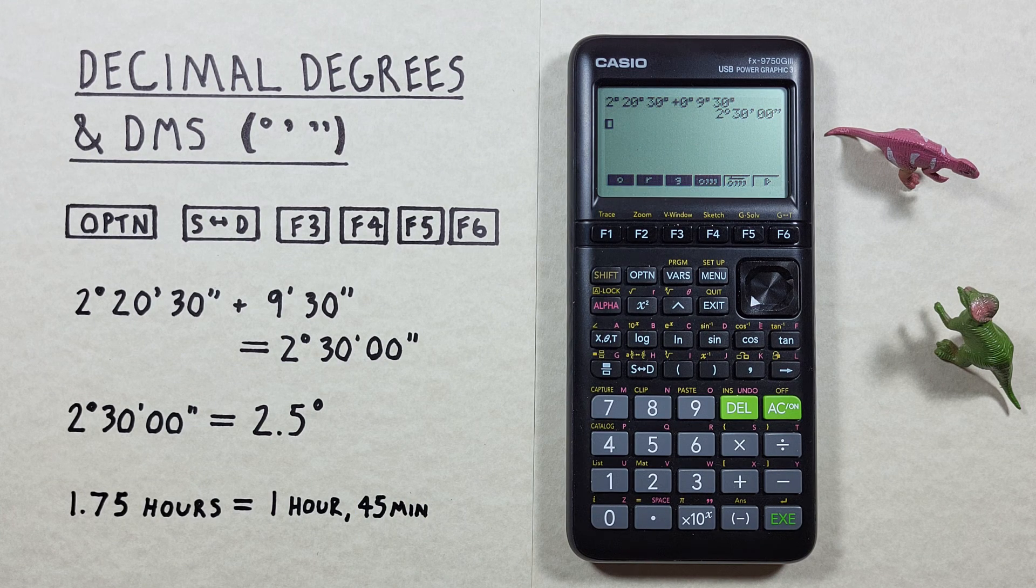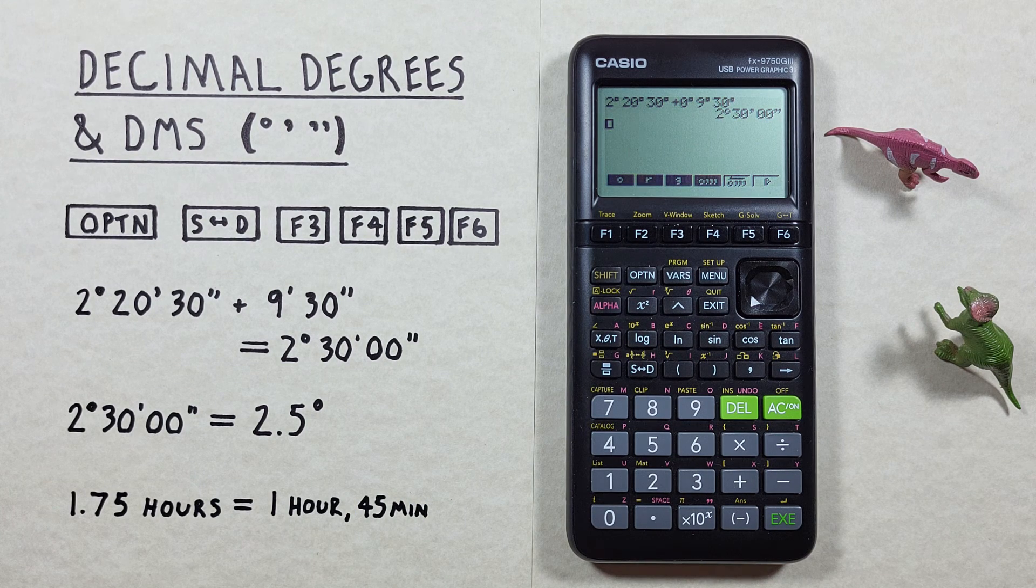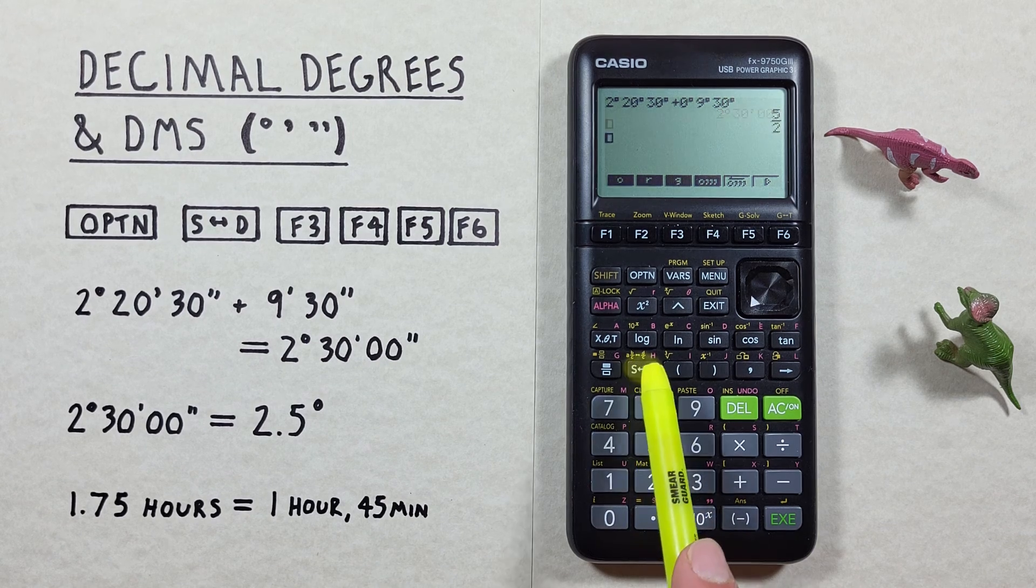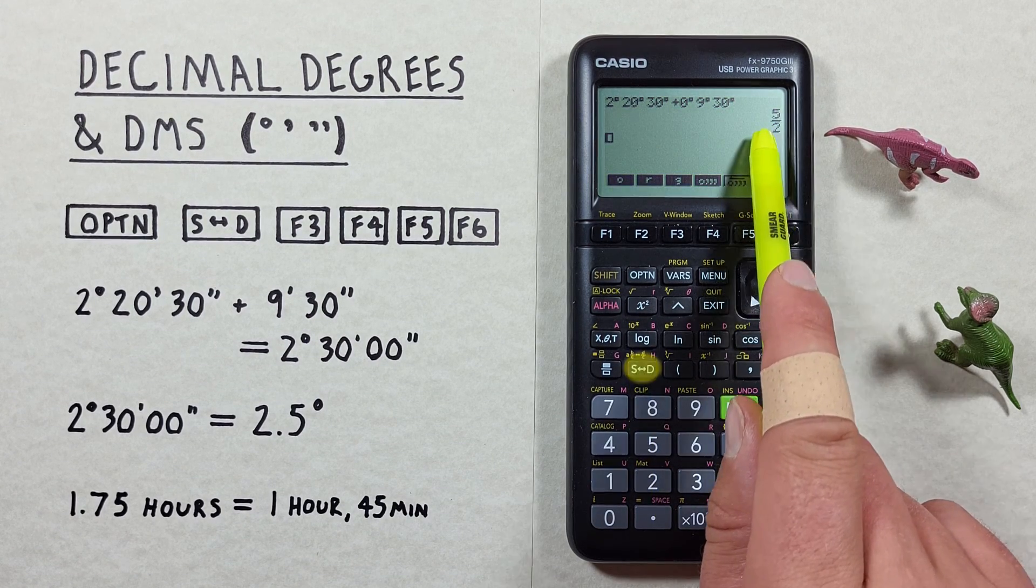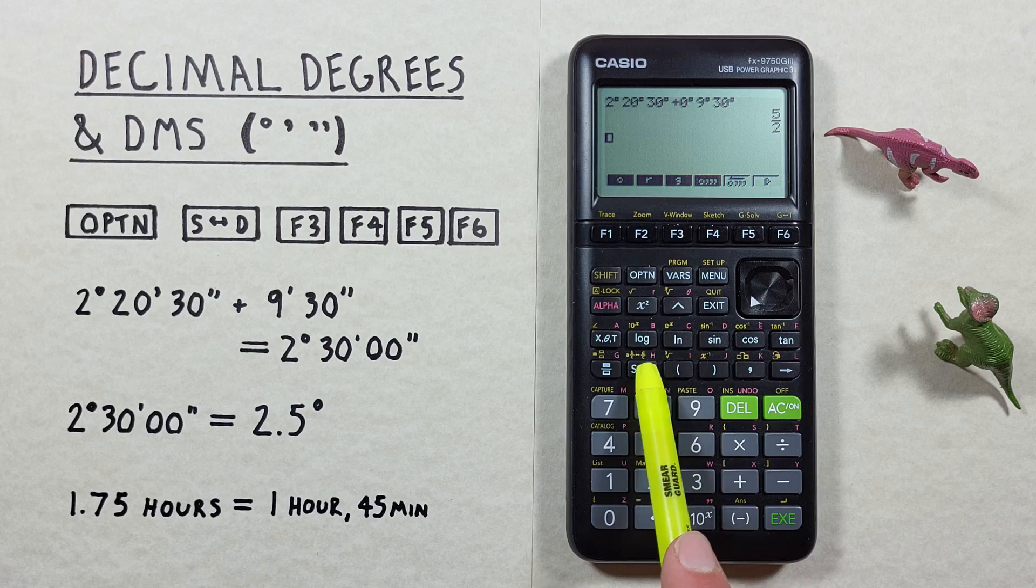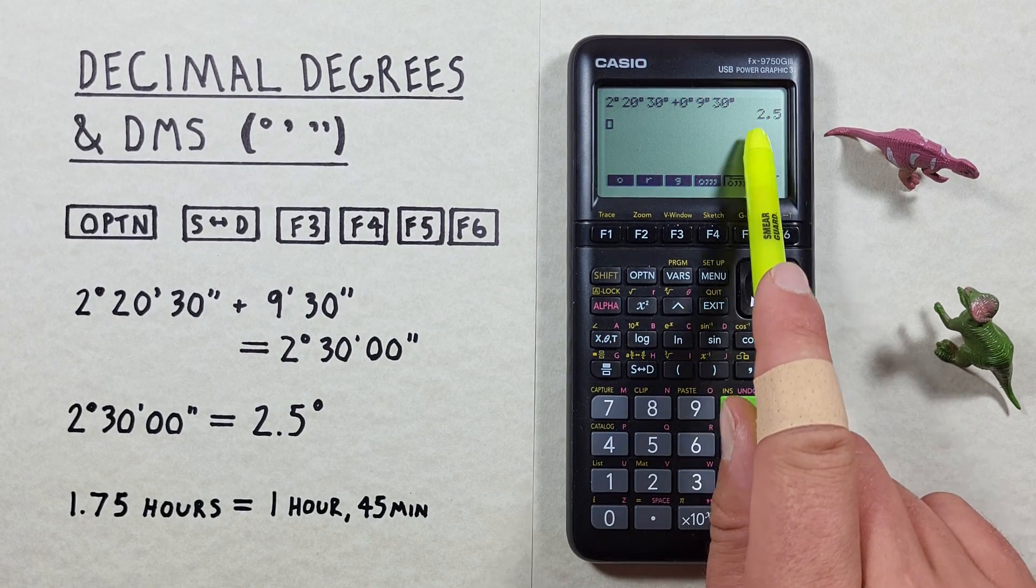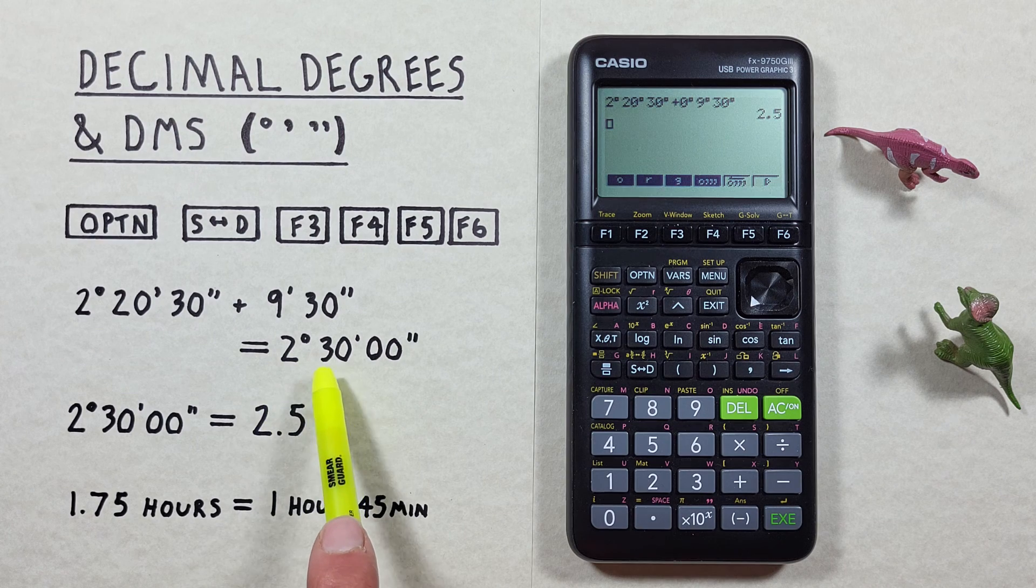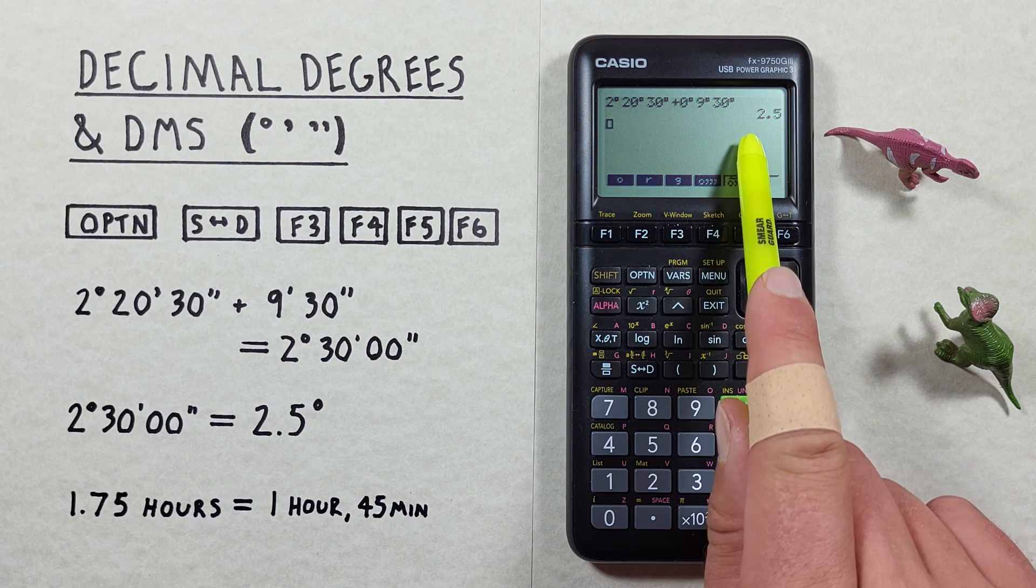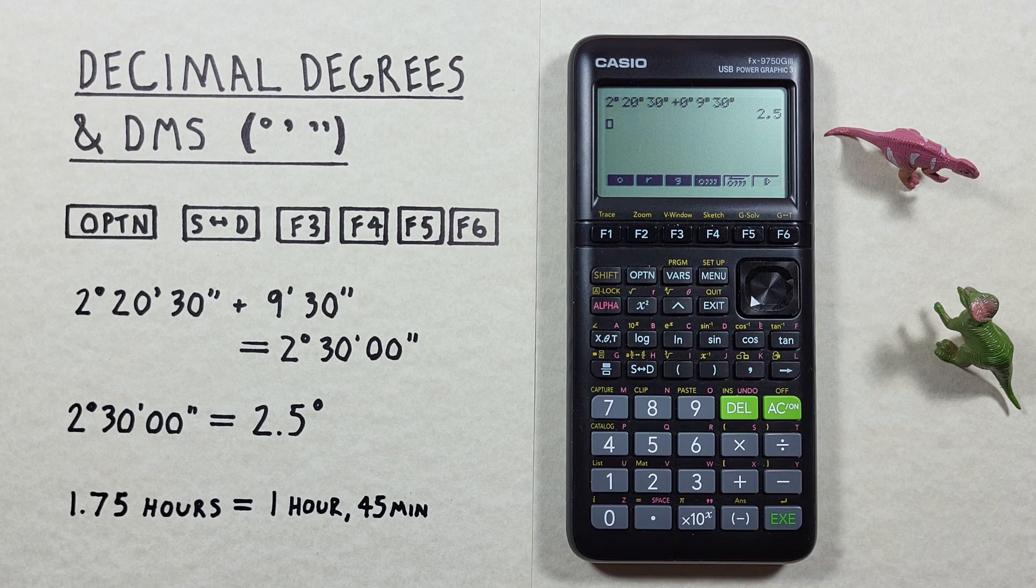And if we want to convert that back to decimal degrees we can hit the S to D conversion key which initially might give us a fraction but if we hit it again converts it back to decimal degrees. So that 2 degrees, 30 minutes, 0 seconds is equal to 2.5 decimal degrees.